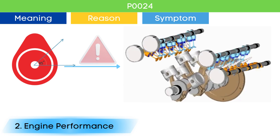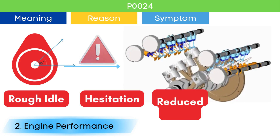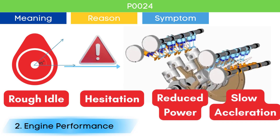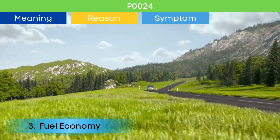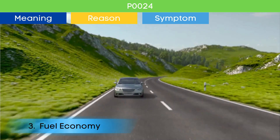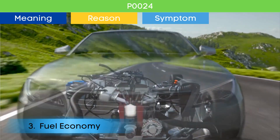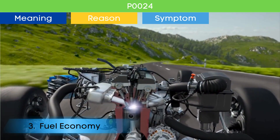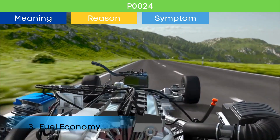This can manifest as rough idle, hesitation, reduced power, and sluggish acceleration. Symptom number three: decreased fuel efficiency. Wrong valve opening and closing due to P0024 lead to incomplete combustion of fuel, which leads to poor fuel economy.